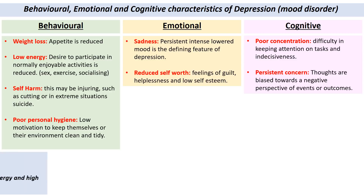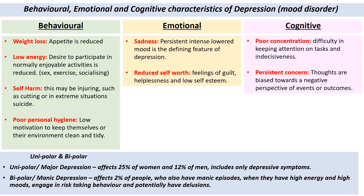When it comes to depression, what we're generally aware of is major depression or unipolar depression, which affects about 25% of women and 12% of men over their lifetimes — so it's quite a common disorder. Major depression includes the depressive symptoms discussed above. However, you might also be aware of bipolar or manic depression, a much rarer disorder affecting about 2% of people. These people also have manic episodes — high energy at some points, raised mood higher than might be expected from the situation, a very high work ethic, and they might be quite creative during manic periods. But during these times they might also engage in very risky behaviour and even have delusions about who they are and their abilities.